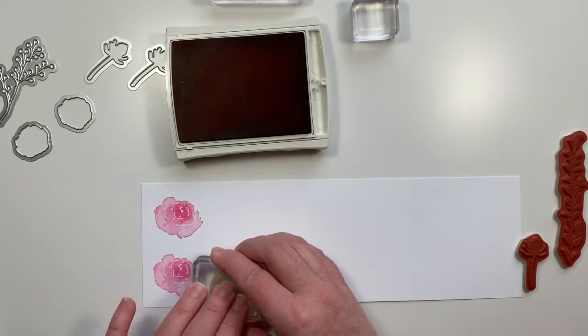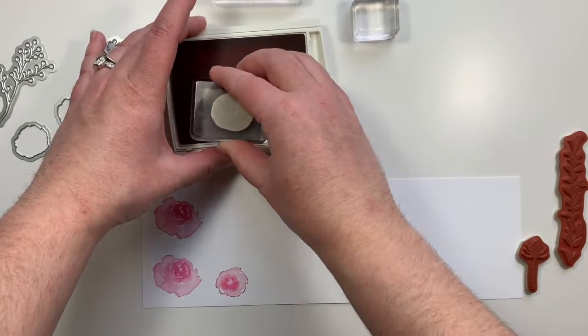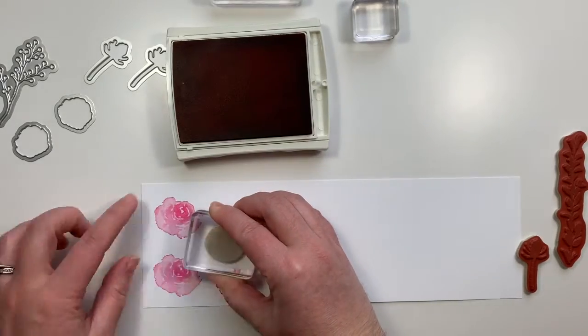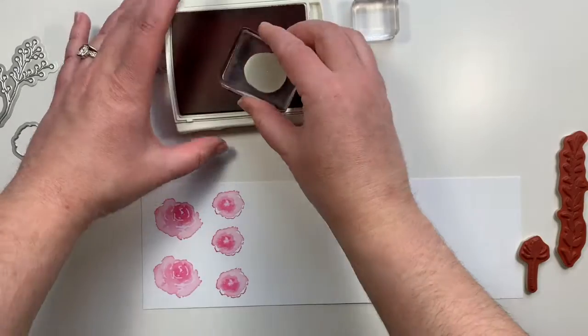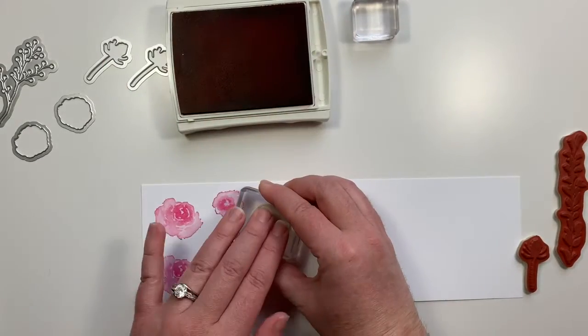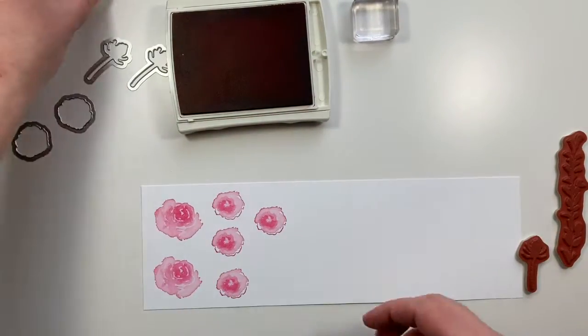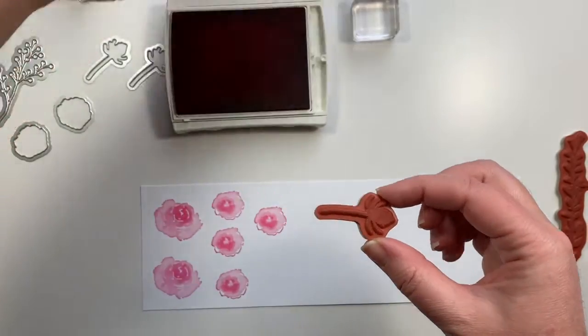I'm stamping enough images for two cards so if you were just making one card you would only need one large flower and two of the smaller flowers, but I want to get as much as I can out of this paper so I'm going to go ahead and do two at a time.